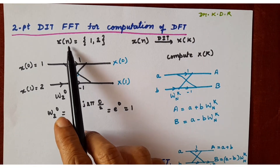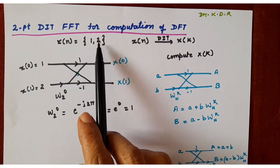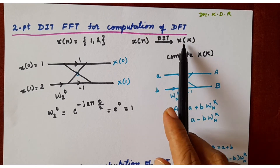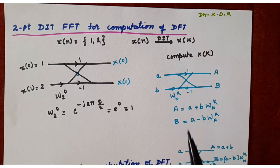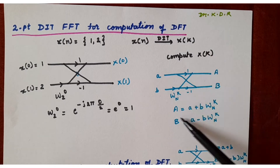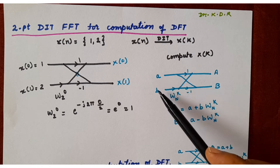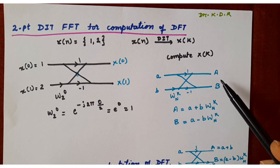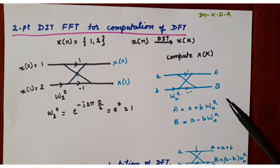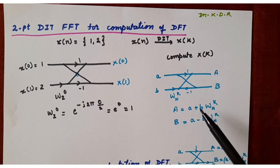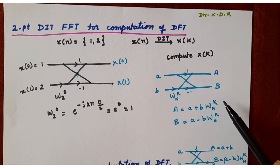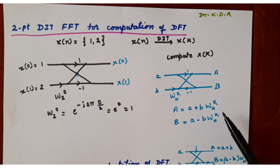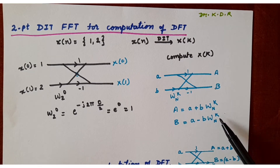The given discrete time sequence x[n] is {1, 2}. Using DIT, you are going to convert the discrete time sequence x[n] to capital X[K], the DFT of the given sequence. You all know the general butterfly diagram of DIT, where small a and small b are the input variables, the twiddle factor is W_N^K, and capital A and capital B are the output variables. The output equation of A is A + B·W_N^K, and capital B is A − B·W_N^K. These two equations are to be remembered while solving a problem.